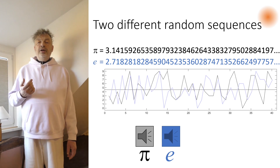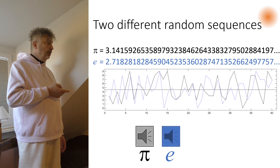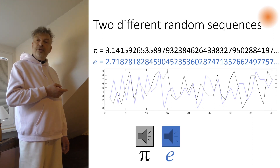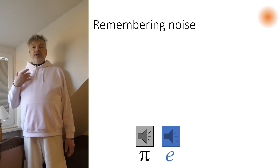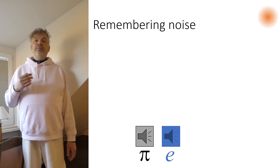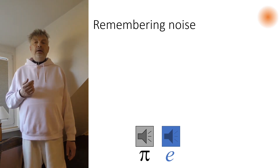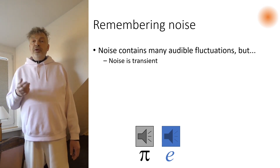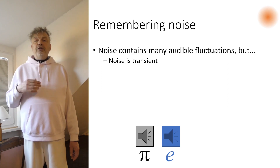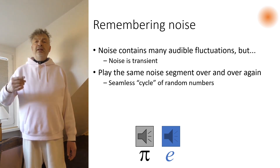Could you tell them apart? If you think you could, then tell me which one I am playing now. In spite of what I have said just before, there is a possible way to tell the sound sequence of e and pi apart — there is a way to remember the sound of pi. The problem with noise is that it is so transient, so evanescent. So in order to detect acoustic characteristics or traits of a single noise sample, one has to repeat it again and again.